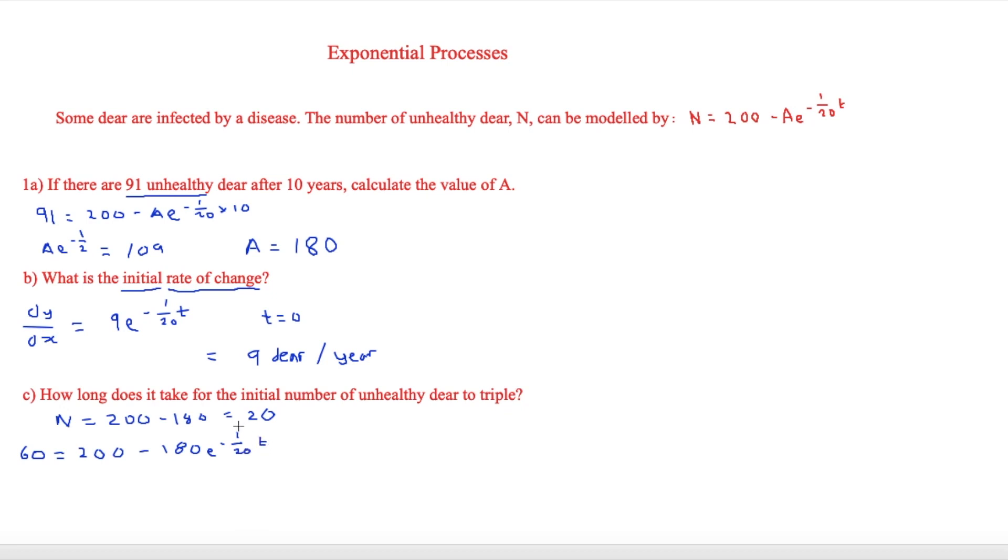We need to rearrange this so we can get the exponential term on one side. We will add 180e to the minus 1 over 20t. Then we can rearrange that slightly more and we'll get e to the minus 1 over 20t on its own. That's equal to 140 over 180, which equals 7 over 9.